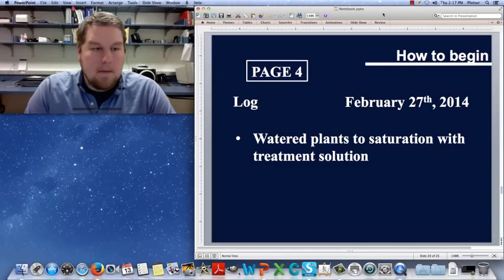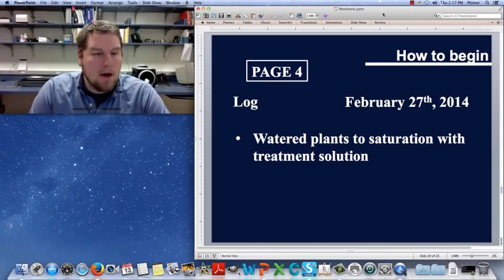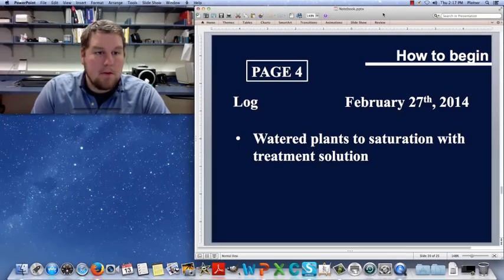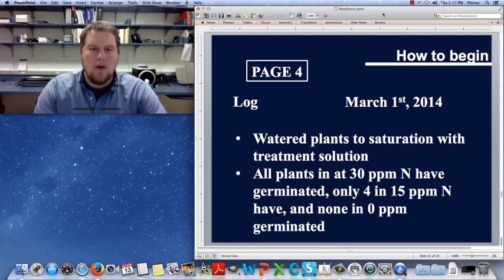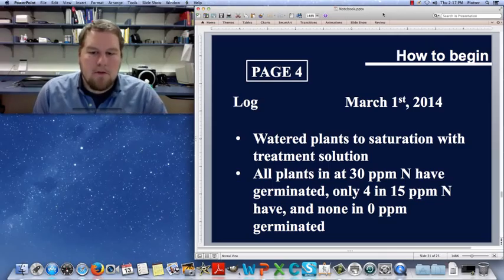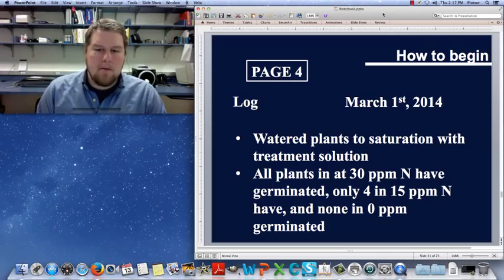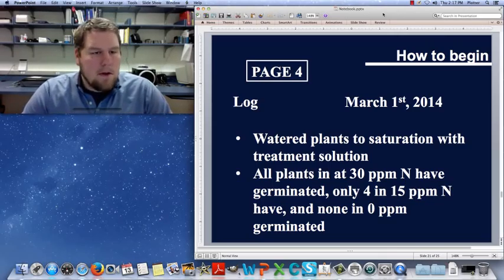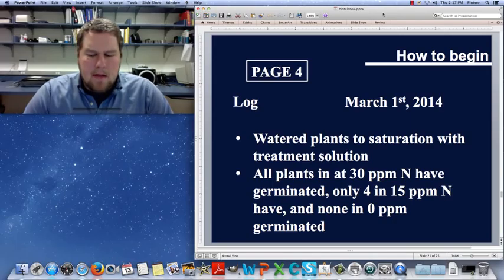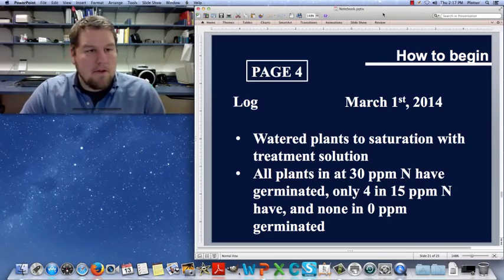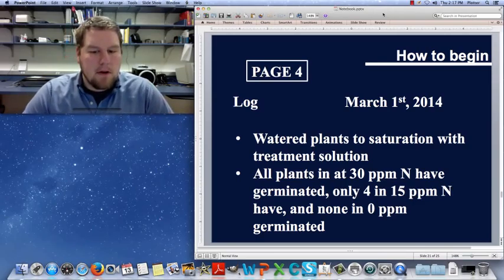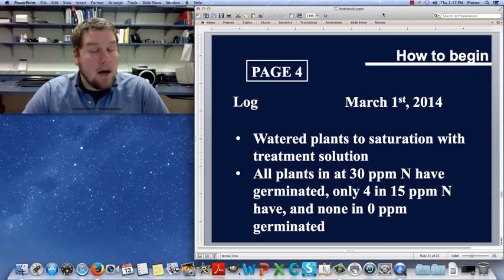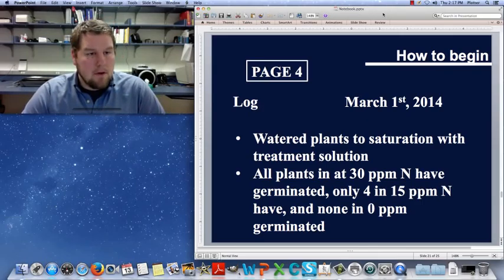So let's say I began on February 27th, and I watered my plants to saturation, soil saturation, with my treatment solution. And then I came back on March 1st, I did the same thing, I watered my plants. But I noticed something this time, so all plants at 30 parts per million nitrogen treatment have germinated, and only four plants in the 15 parts per million nitrogen have germinated. And none in the zero parts per million have germinated.